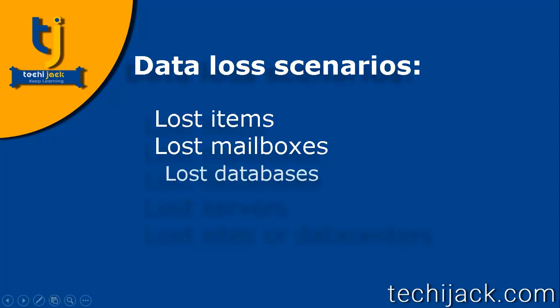Our third data loss scenario is lost databases. If you lose a database, that means all the mailboxes in that database are lost. Additionally, while the database is missing, users whose mailboxes are in that database can no longer access their mailboxes and cannot send and receive messages. This typically occurs because of system malfunction, which can include a disk failure or database corruption, and the recovery of a lost database is very critical because the outage might affect many users.